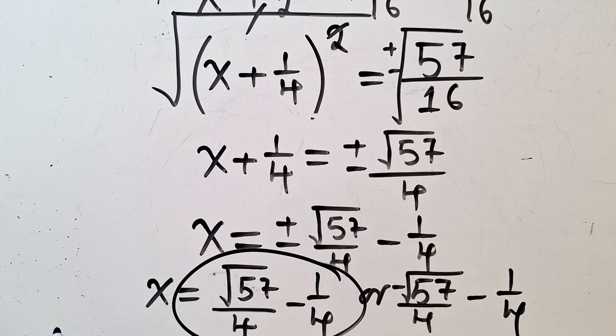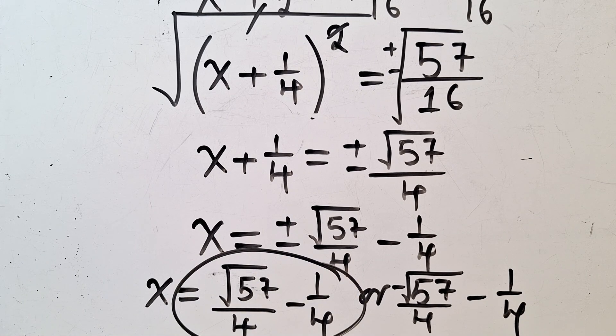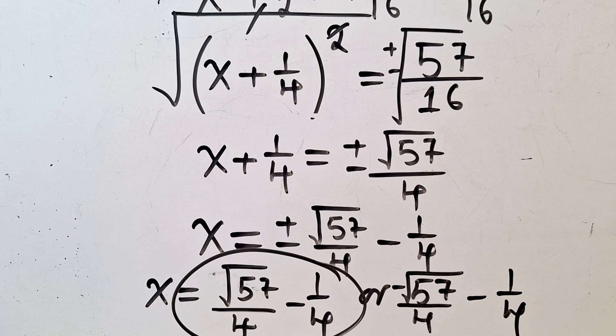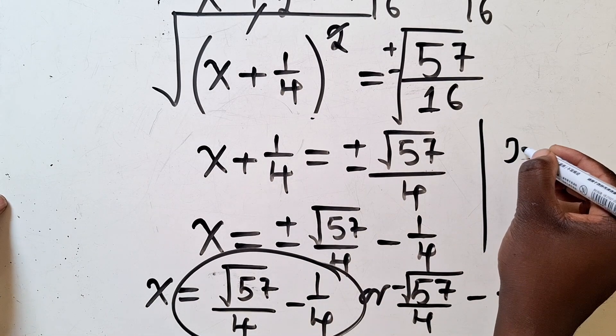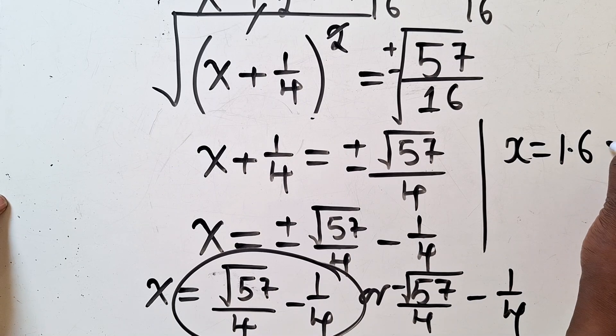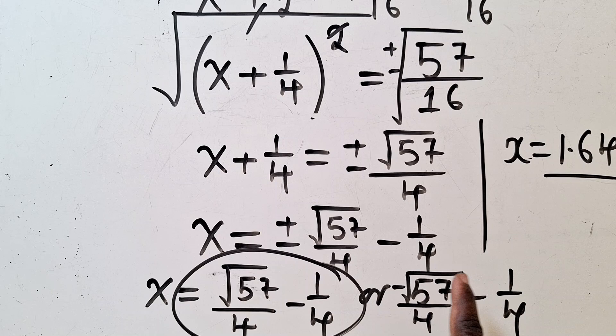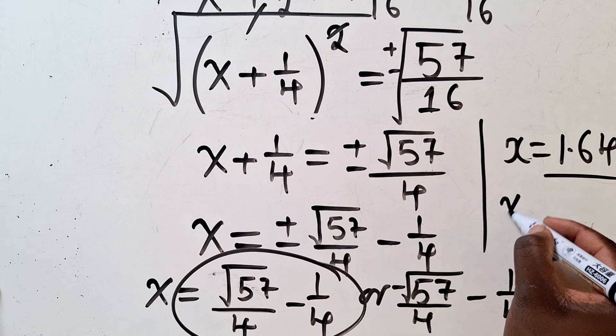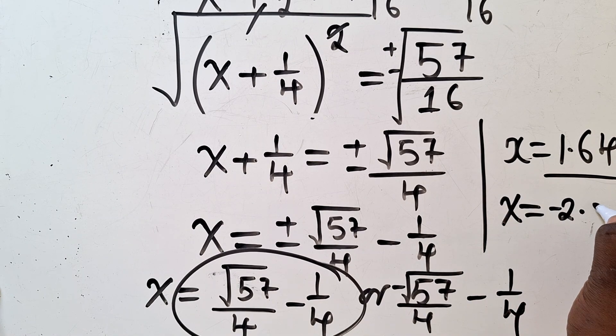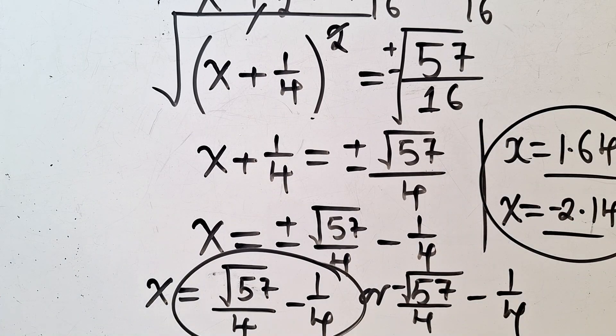When we punch on our calculator, square root of 57 over 4 minus 1 over 4, this is giving us 1.64. So one of the values x is equal to 1.64. The other one, when we punch this, negative square root of 57 over 4 minus 1 over 4, it's also giving us the value that we found, x to be equal to negative 2.14. These are the two values.